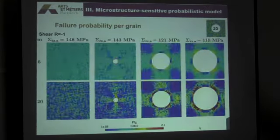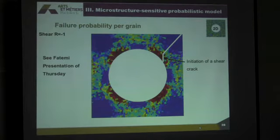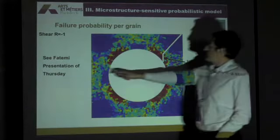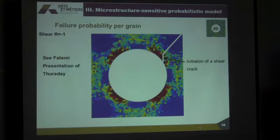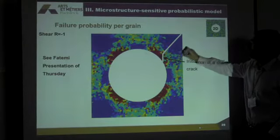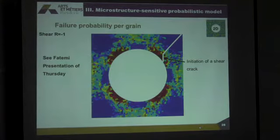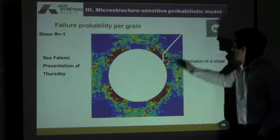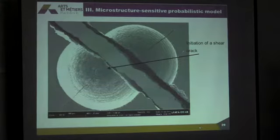We do that for tension, torsion — exactly the same kind of results. Then, something which is very interesting: I go back to Mr. Fatehi's presentation of Thursday. He showed something very interesting — that in torsion, when the hole is introduced, you can have the occurrence of a crack here, and then the crack branches. This is exactly what this model predicts: it predicts that in shear mode, you've got four zones here where the crack can initiate in a shear mode, and this was the observation of Mr. Fatehi.